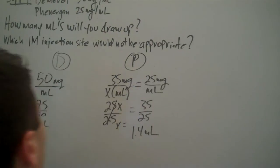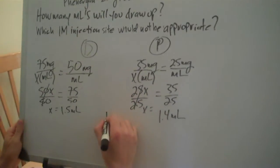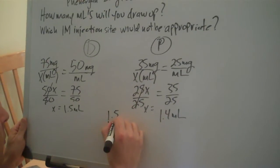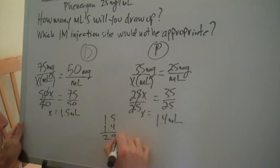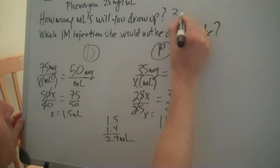Let's just say that both of these medications are compatible to put in the same syringe. So the total of the two is 2.9ml, which is our answer up here.